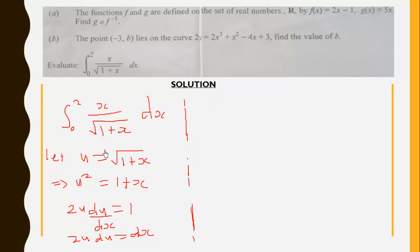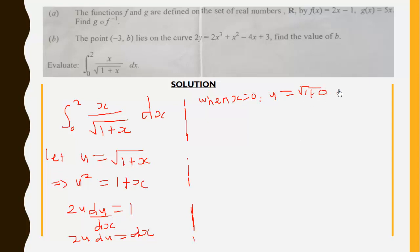When x = 0, u = √(1 + 0) = √1 = 1. When x = 2, u = √(1 + 2) = √3. So the limits change from 0 and 2 to 1 and √3 respectively.